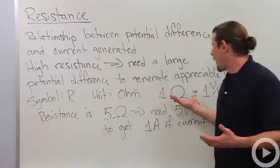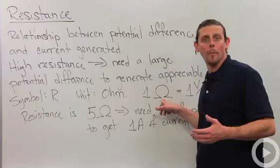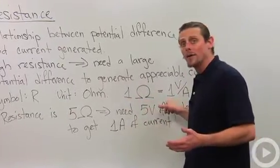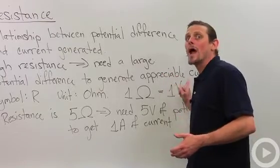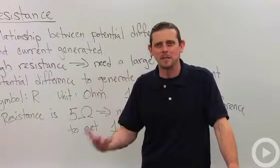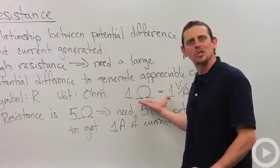Alright, so what is an ohm? One ohm, and we use this strange horseshoe symbol for ohm, one ohm is equal to one volt per amp. And it's real easy to understand what resistance means just from this relationship.